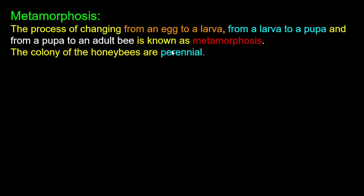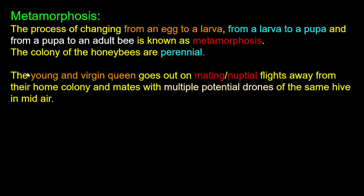The colony of honeybee is perennial, meaning it exists all year round. The young and virgin queen undergoes nuptial flights. The young and virgin queen goes out on nuptial flights away from the home colony and meets with multiple potential drones of the same hive in mid-air.